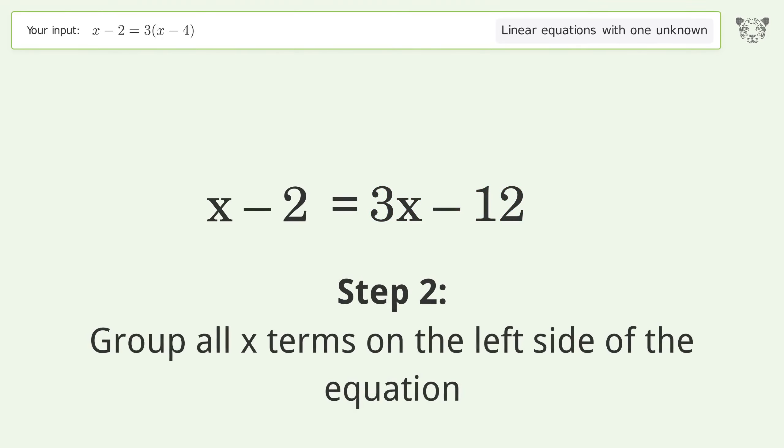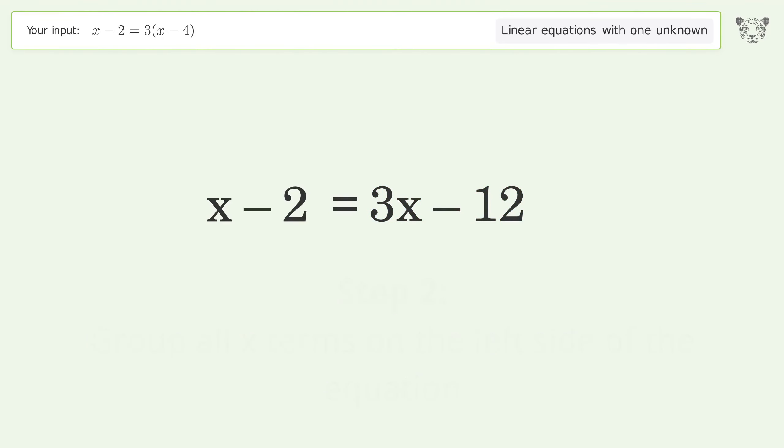Group all x terms on the left side of the equation. Subtract 3x from both sides, group like terms, and simplify the arithmetic.